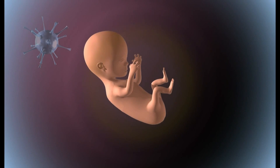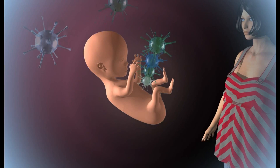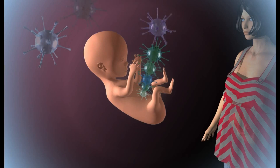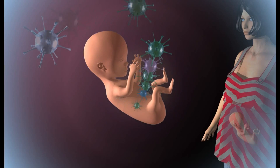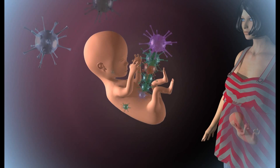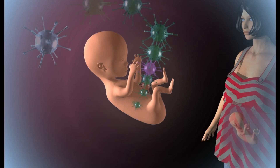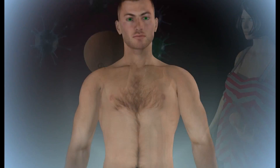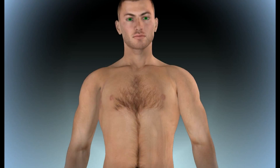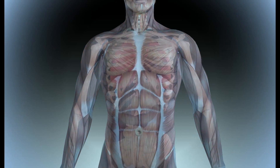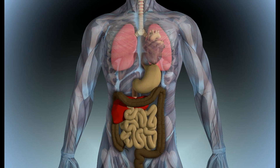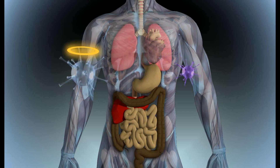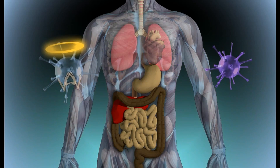Our bodies are occupied by numerous bacteria. Bacteria settlement usually starts immediately after birth because of our parents and our environment. Not all bacteria are harmful. For example, the bacteria flora in our intestinal tract is crucial for our survival. This is called symbiotic bacteria.